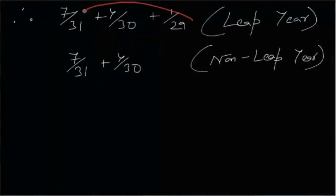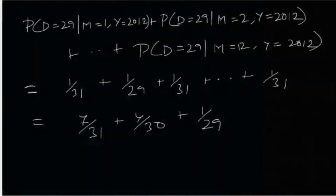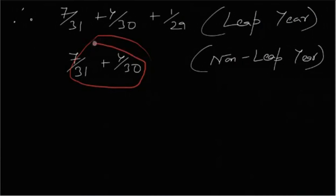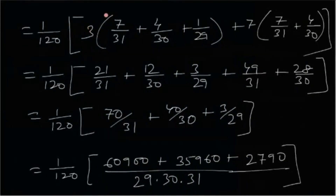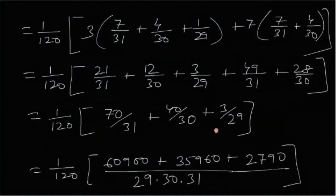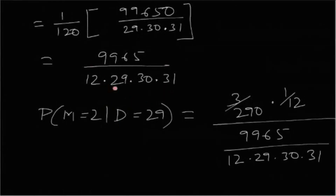After doing all the calculations, the double sum evaluates such that P(D=29) = 9965 / (12 × 29 × 30 × 31).